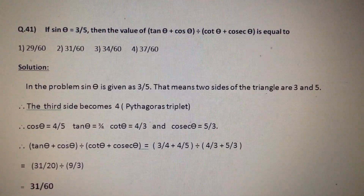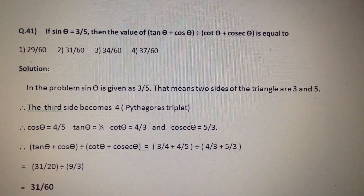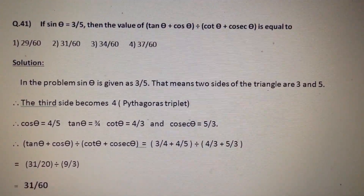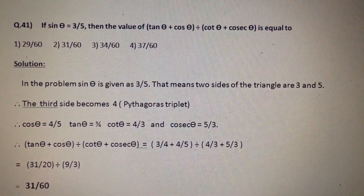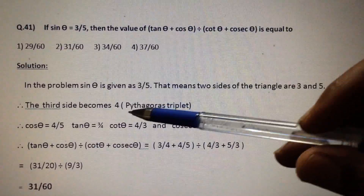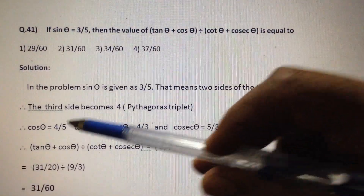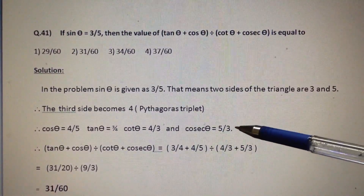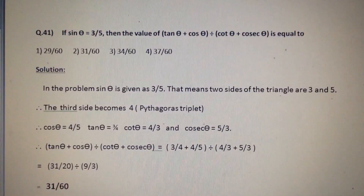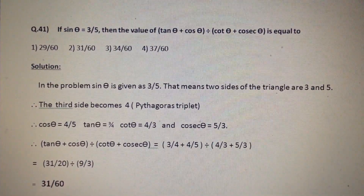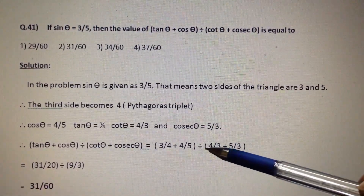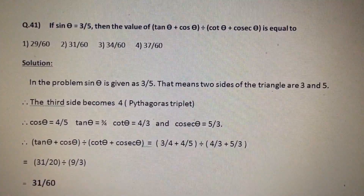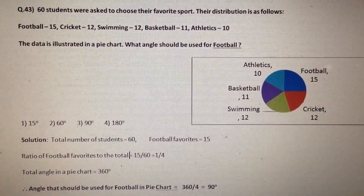Next question: if sin θ = 3/5, find the value of (tan θ + cos θ) / (cot θ + cosec θ). It is given that sin θ = 3/5. Considering a right triangle where 3 and 5 are sides — this is a Pythagorean triplet — so 5 is the hypotenuse and 4 is the third side. Therefore cos θ = 4/5, tan θ = 3/4, cot θ = 4/3, and cosec θ = 5/3. Substituting: (3/4 + 4/5) / (4/3 + 5/3) = 31/60. The answer is option number 2.